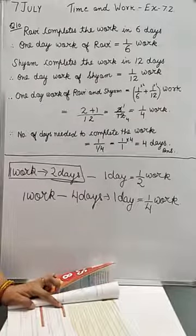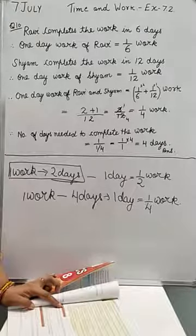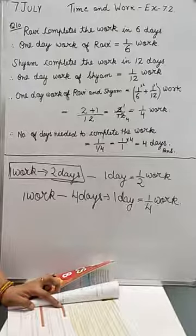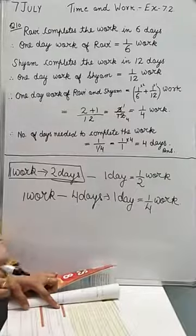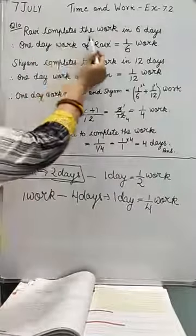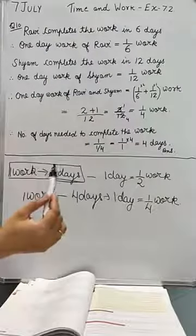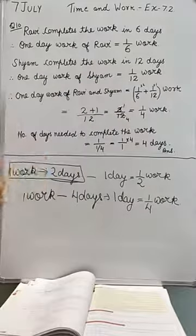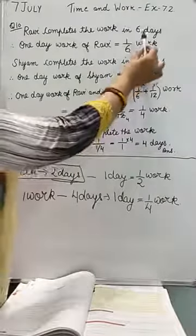Since Ravi alone takes 6 days, but now Shyam is also helping him, you should understand that the work will be completed before 6 days. So surely your answer will be less than 6 days. Now, Ravi completes the work in 6 days. Therefore, one day's work of Ravi is one-sixth of the total work.